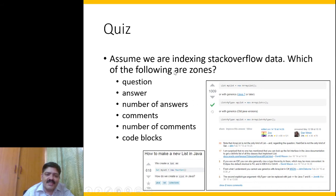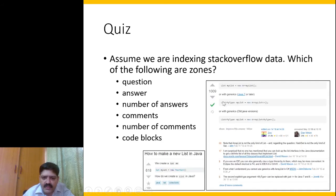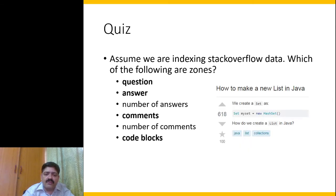Here is a quiz: assuming we are indexing this Stack Overflow data, which of the following do you think are zones? The answer is: question, answer, comments, and code blocks. Code blocks are the ones with a gray background that carry code. These contain indexable content, so we call them zones.